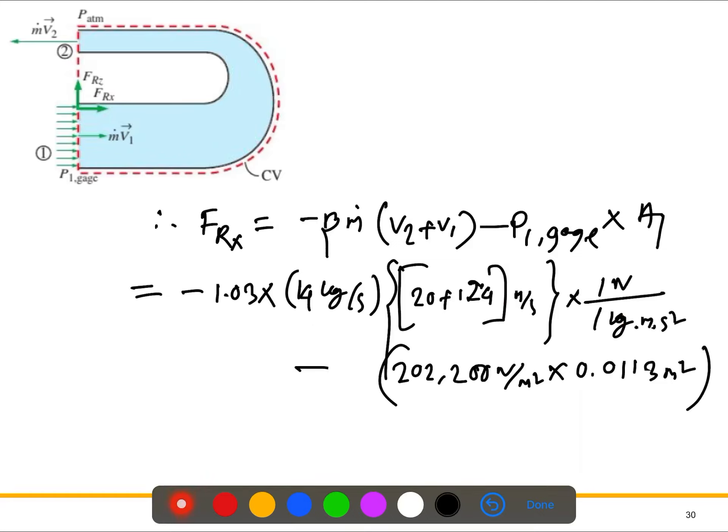It is 202,200 Newtons per meter squared, and the area is 0.0113 meter squared. So the first part if we solve it will be negative 306. The second part is 2285. So we have got negative 2591 Newtons. That means this is the horizontal force, negative 2591 N, that is actually acting in the negative x direction.